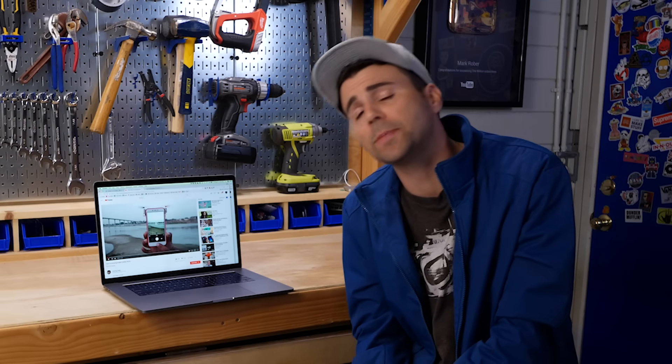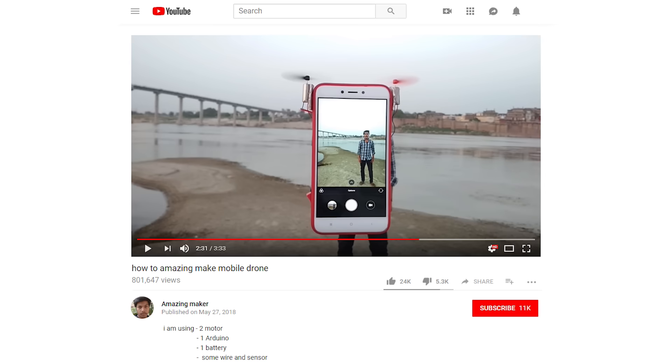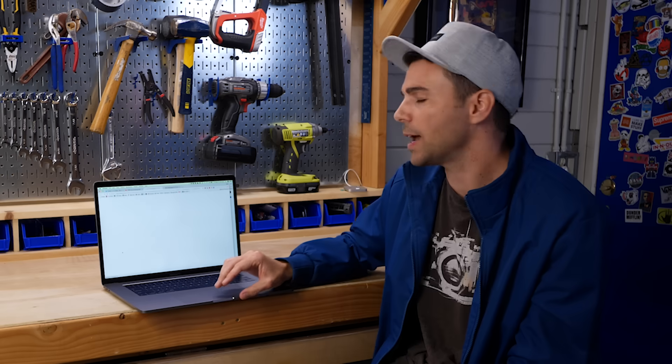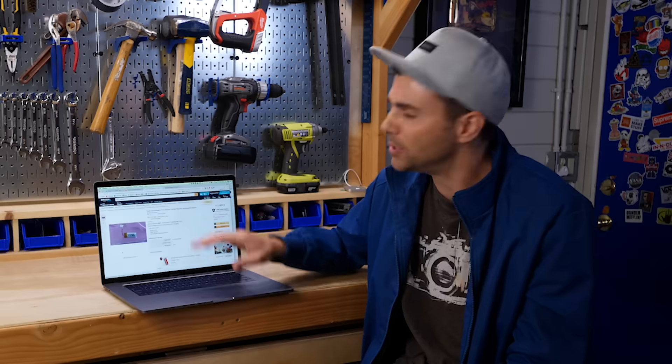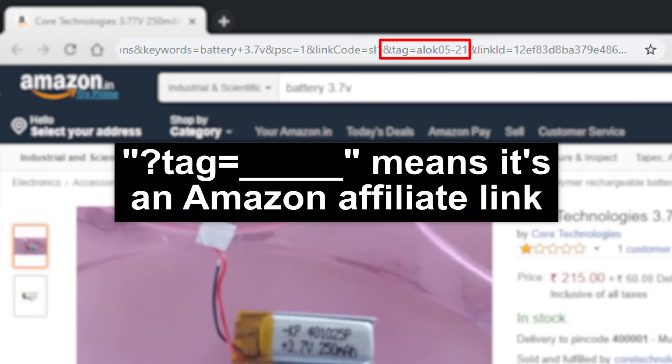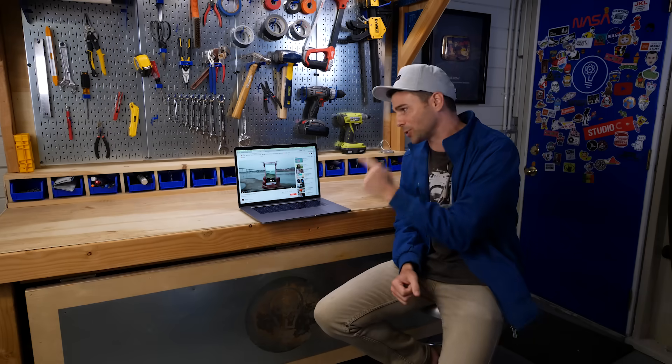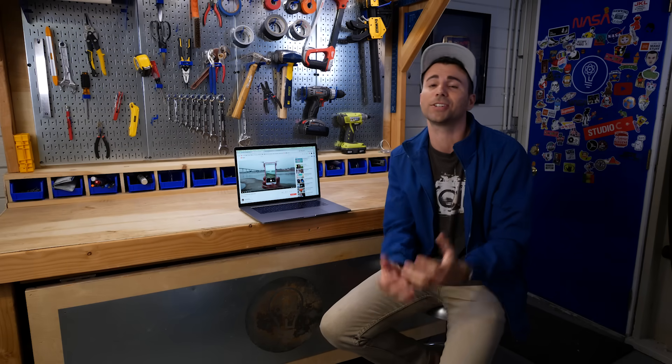But how, you might ask, would they know what components to use? Well, here in the description, Amazing Maker was kind enough to put links. Amazon affiliate links. You can tell by the URLs. So he is making money off the crushed dreams of aspiring engineers without enough experience yet to know that this is total BS. And aspiring engineers are my people. And you don't mess with my people. Let's do this.